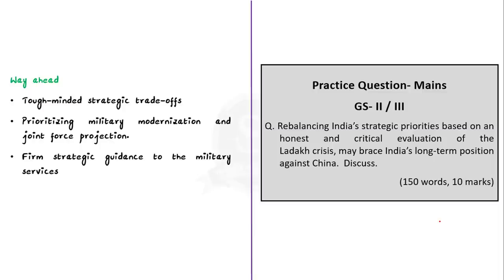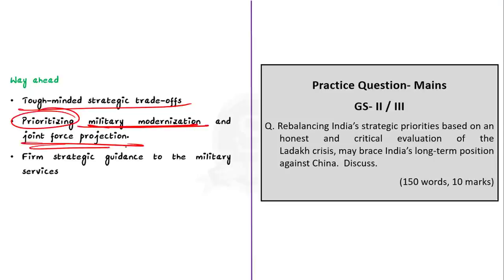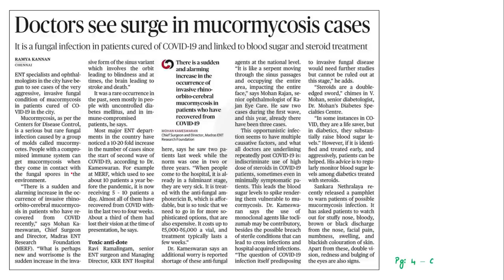The third lesson is with respect to India's position in the Indian Ocean. It is good for India to accept more risk on the LAC in return for a long-term advantage and influence in the Indian Ocean region, because the future of the Indian Ocean region is more consequential and uncertain compared to the Himalayan frontier. If India fails to answer the rapid expansion of Chinese military power, there are chances it will affect India's dominant power, political influence, and security in the Indian Ocean. The key takeaway is that India needs to make tough-minded strategic trade-offs by prioritizing military modernization and joint force projection, with the central government issuing firm strategic guidance to the military services.